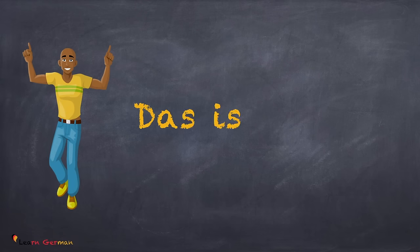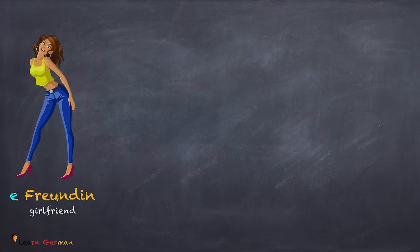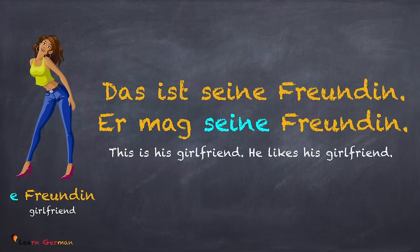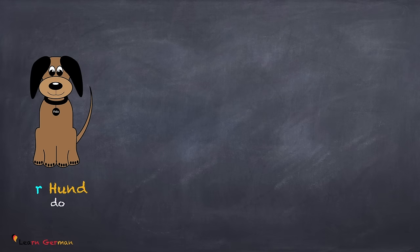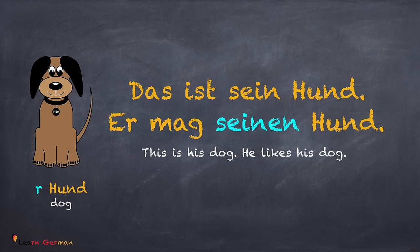Let's come to a different possessive pronoun. Das ist Alex. Und das ist seine Freundin. Er mag seine Freundin. Please notice that the Akkusativobjekt here is feminine. Coming to the masculine Akkusativobjekt: Das ist sein Hund. Er mag seinen Hund. Since it's a masculine Akkusativobjekt, the possessive pronoun changes from sein to seinen.